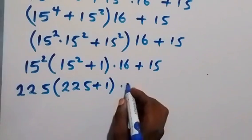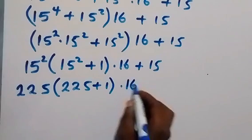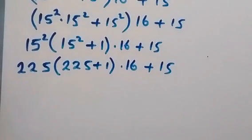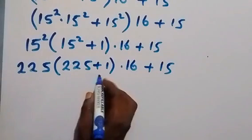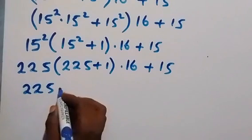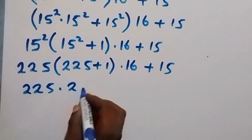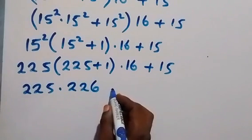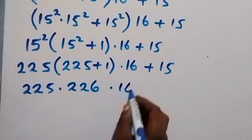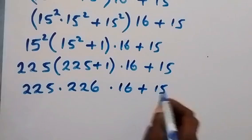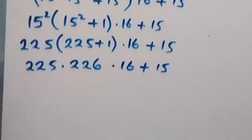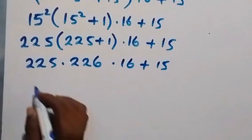In the next step, 15 squared is 225, so we have 225 times the bracket 225 plus 1, close bracket, times 16, plus 15. Then 225 plus 1 is 226, so we have 225 multiplied by 226, then multiplied by 16, plus 15.